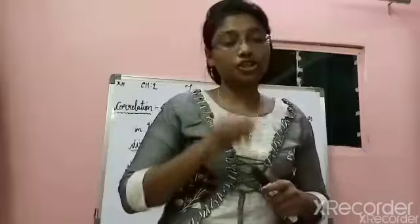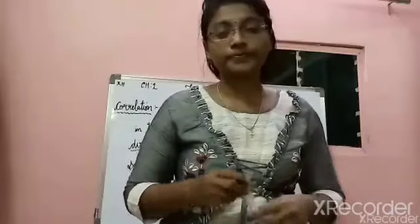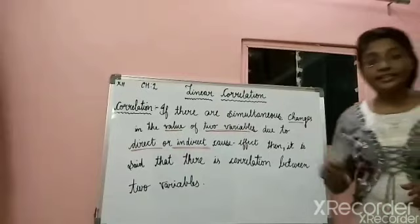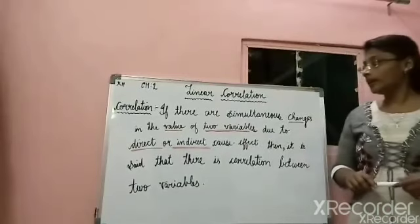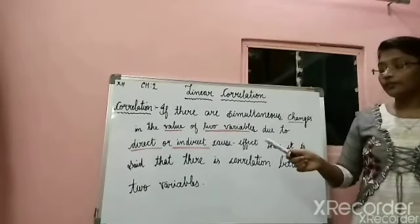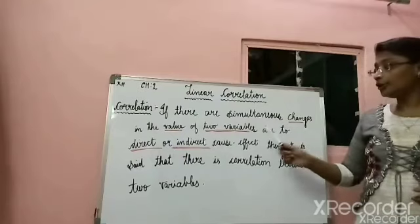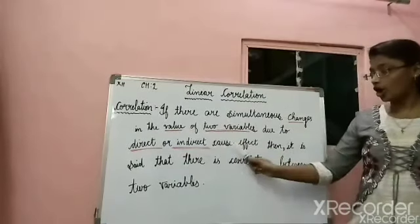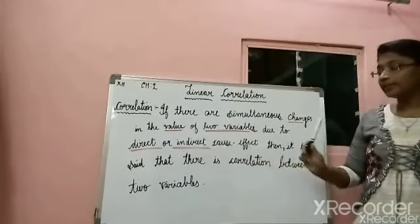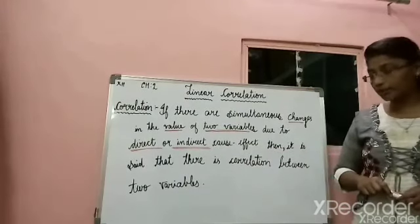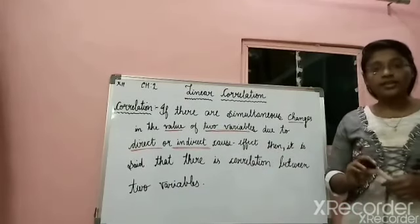Now let us come to the exact definition of correlation. If there are simultaneous changes in the value of two variables due to direct or indirect cause or effect, then it is said that there is a correlation between the two variables.